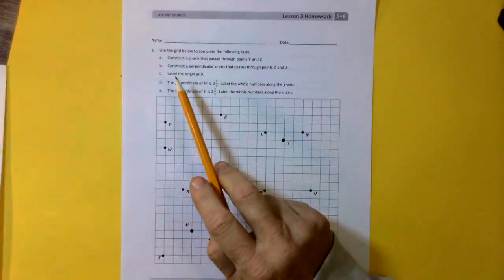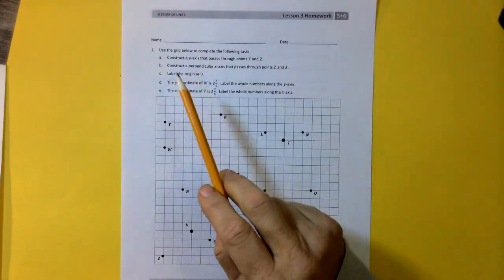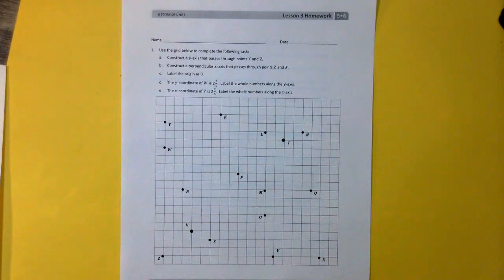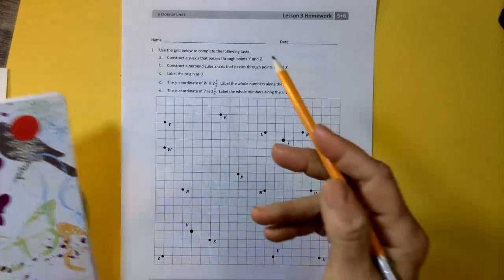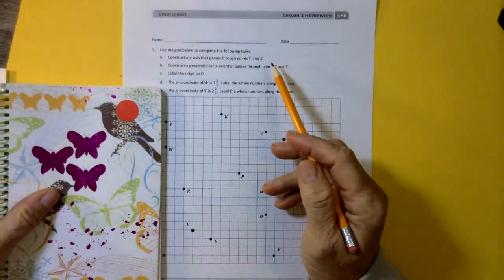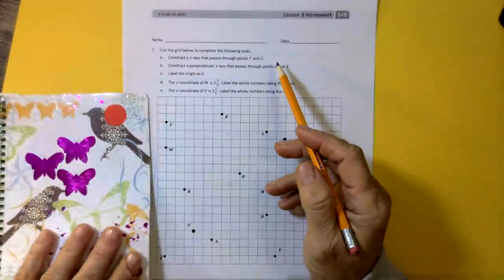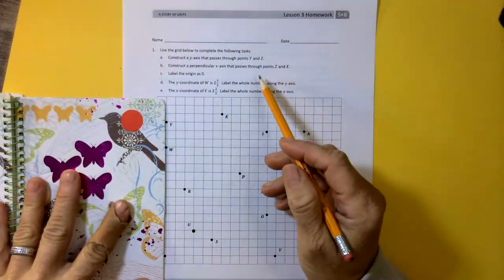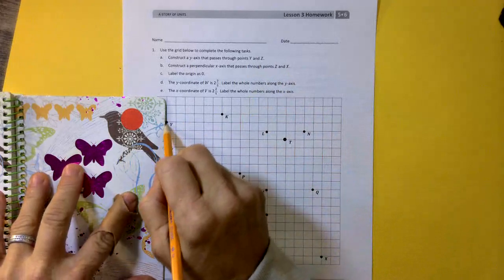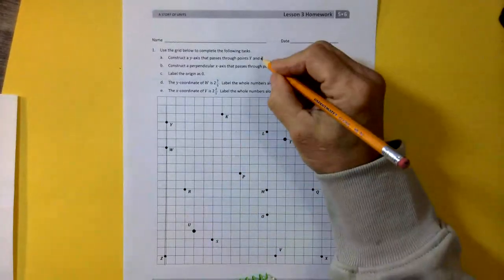Use the grid below to complete the following tasks. Construct a y-axis going through points y and z. So I don't have a ruler. What I'm going to do is I'm going to just use the edge of my journal here. There's y and there's z. Actually, I'm just going to flip it like this. There you go, y and z. Done that.